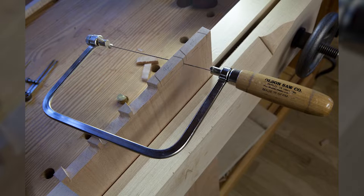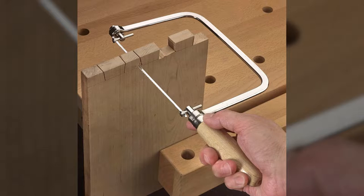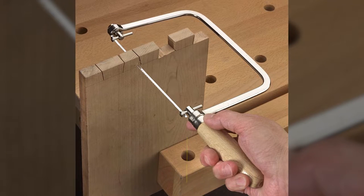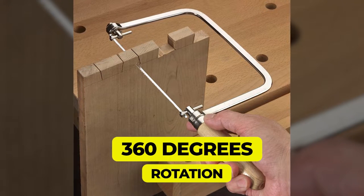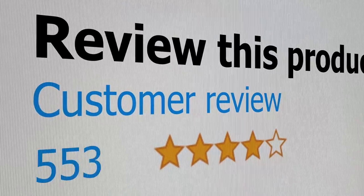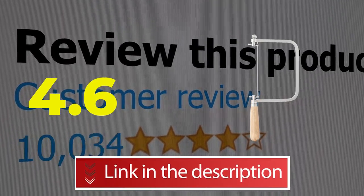The handle of this tool is constructed of a mix of wood and light steel. Here are the main features of this product: allows tensioning of both ends of traditional coping saw blades. Blades may be rotated 360 degrees in order to saw in any direction. This product customer review is 4.6 out of 5. Click the link in description.